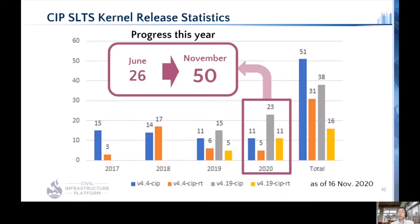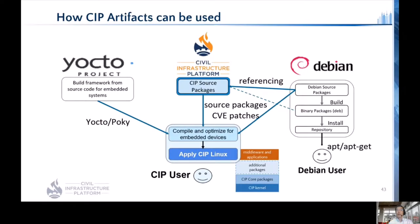Here explains how CIP artifacts can be used by CIP users. CIP refers to source or binary packages in Debian. If you'd like to use Debian source packages, you can use Yocto/Poky as a build system. CIP core packages contain tens of packages, which may not be sufficient for end products, so users can add necessary packages from Debian by writing recipes. Debian provides LTS maintenance, and even extended LTS can be provided, so super long-term support including userland packages can take advantage of these maintenance frameworks.